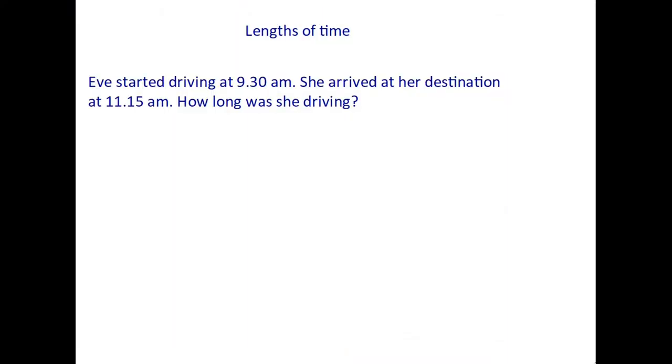We are often asked to calculate lengths of time and this usually involves someone carrying out an activity and we are asked to work out how long that activity took. So here's a typical example. Eve started driving at 9:30 am, she arrived at her destination at 11:15 am, and we're asked how long was she driving. Well both those times are in the morning because they say am. Now the temptation is to pick up a calculator and try to work out the difference between those times, but unfortunately this just does not work.